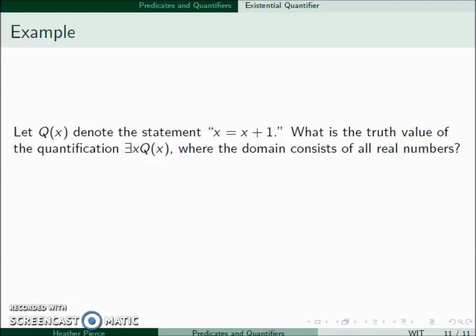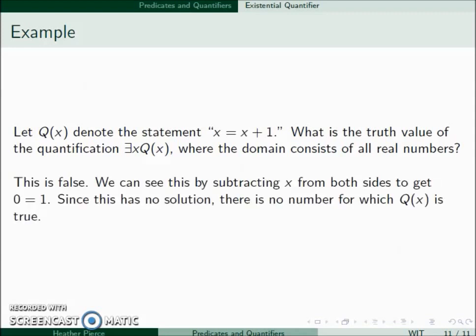For example, let's let Q(x) denote the statement x = x + 1. We want to know the truth value of ∃x Q(x). Well, this is false. Subtracting x from both sides gives 0 = 1, which has no possible solution. If this had a single solution, we would have had it true. If it had more than one solution, it would have still been true. So we need at least one, which in this case we don't have.